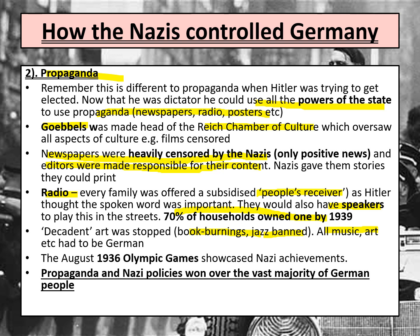Another form of propaganda was the 1936 Berlin Olympic Games. The idea was to show off how great Germany was to the rest of the world by topping the medal table. You might remember that Jesse Owens, an African-American athlete, completely disproved Nazi ideas of Aryan supremacy when he won events like the 200 metres. But nonetheless, propaganda and Nazi policies won over the vast majority of German people, with many buying into the idea that they were making Germany a perfect place.